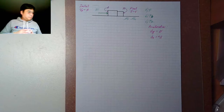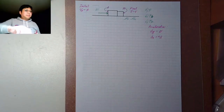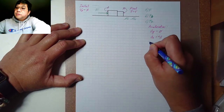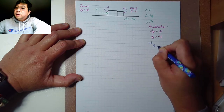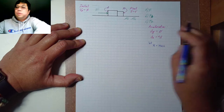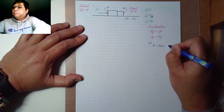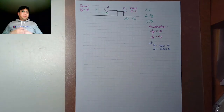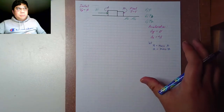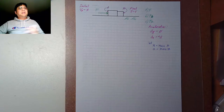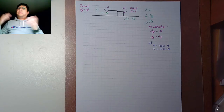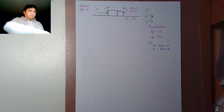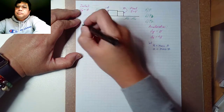Let uppercase M be the mass of block A and lowercase m be the mass of block B. Make sure you indicate both M and m. In some problems they might use subscripts or different symbols — that's fine, just change the symbol, but the procedure remains the same. So let's draw the free body diagram.